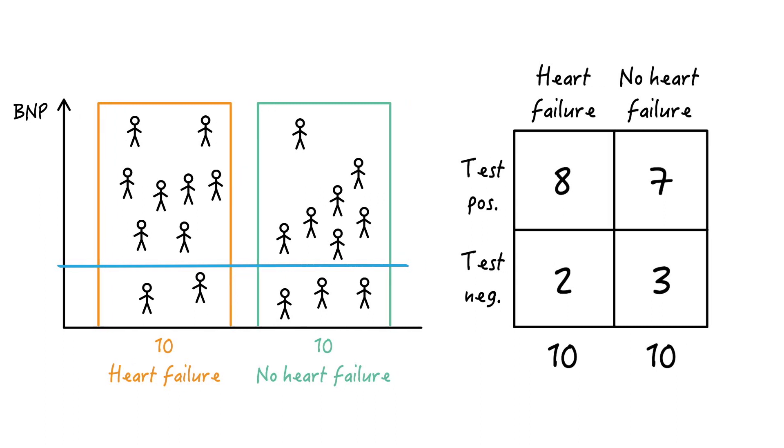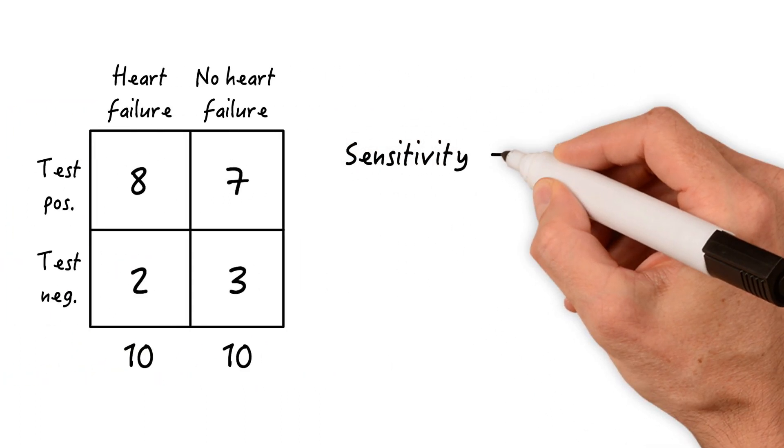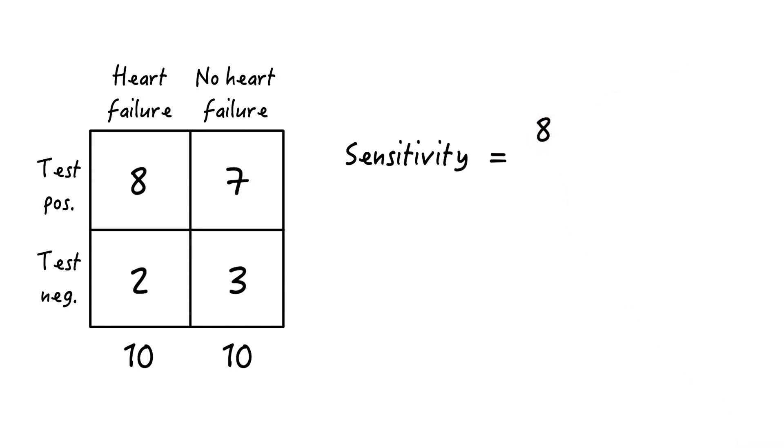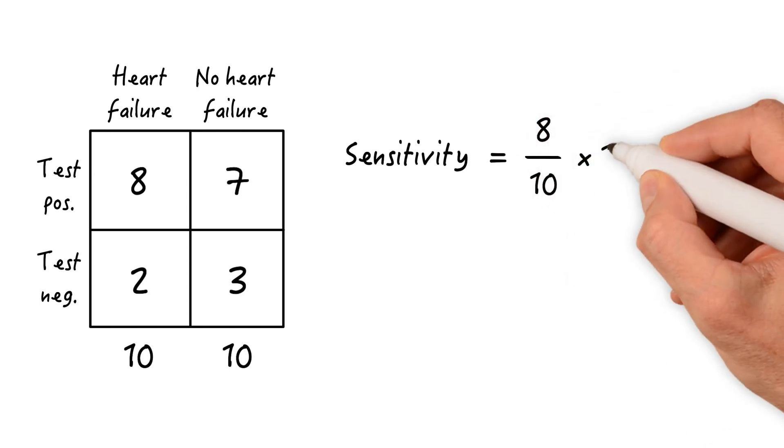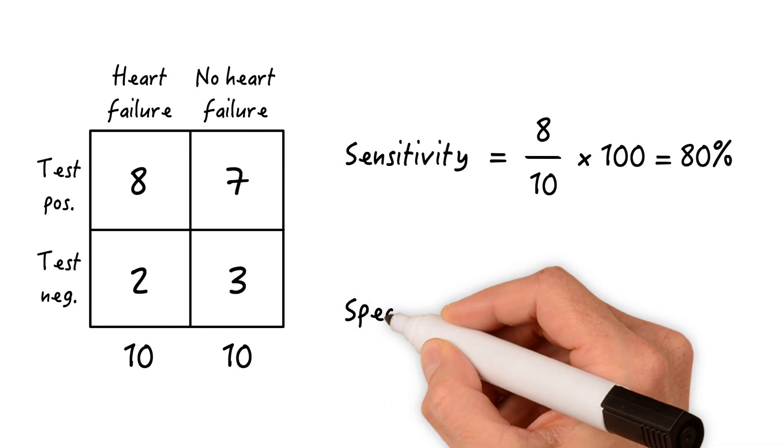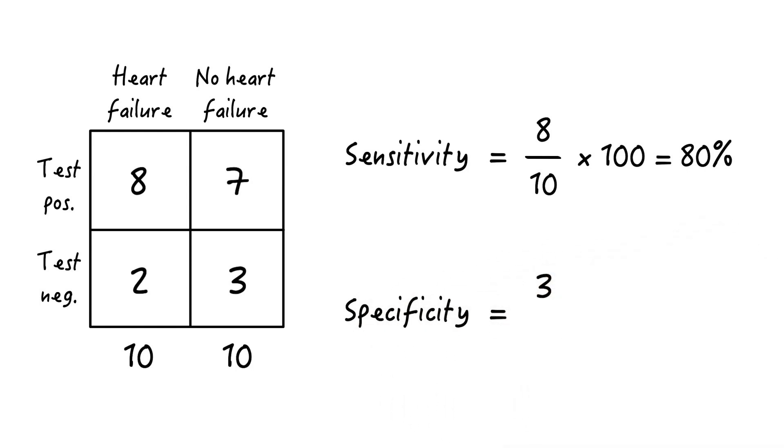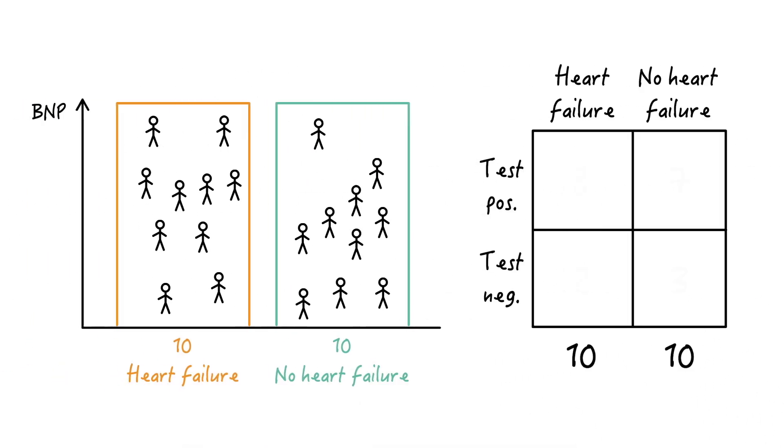What are the sensitivity and specificity? The sensitivity would be calculated as 8 true positives divided by all diseased folks or 80%, and the specificity would be calculated as 3 true negatives divided by all non-diseased individuals or 30%.